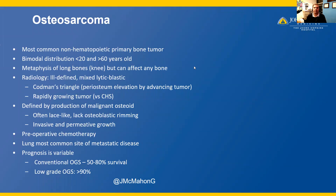Osteosarcoma is the most common non-hematopoietic primary bone tumor, with a bimodal age distribution in patients younger than 20 and greater than 60 years of age. It generally occurs in the metaphysis of long bones, most commonly in the knee, but it can affect any bone. Radiographically, osteosarcoma may be seen as an ill-defined mixed lytic and blastic neoplasm. You may see a Codman's triangle, which is when the periosteum is lifted by the elevation of an advancing tumor front. Osteosarcomas generally grow rapidly, unlike chondrosarcomas which are generally slower growing and more indolent. Osteosarcoma is defined by malignant cells producing osteoid directly — often lace-like — and it often lacks osteoblastic rimming. Osteosarcomas are often invasive and have permeative growth.